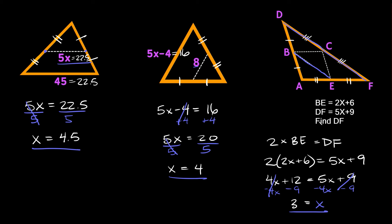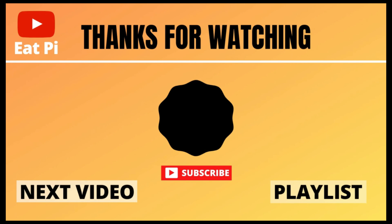Now that we know X equals 3, we can find DF: 5 times 3 plus 9 equals 15 plus 9, which equals 24. So segment DF is equal to 24. If you found the video helpful, definitely leave a thumbs up, and if you have any questions or want to see more examples, just let me know in the comments below.